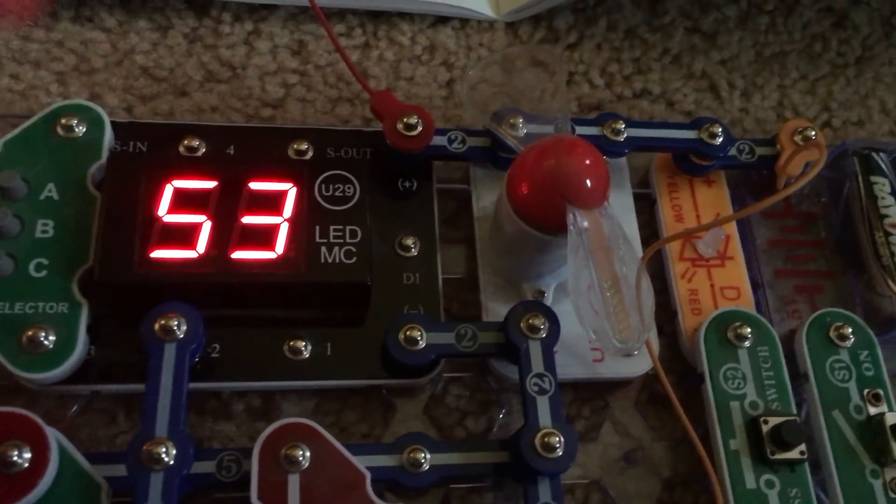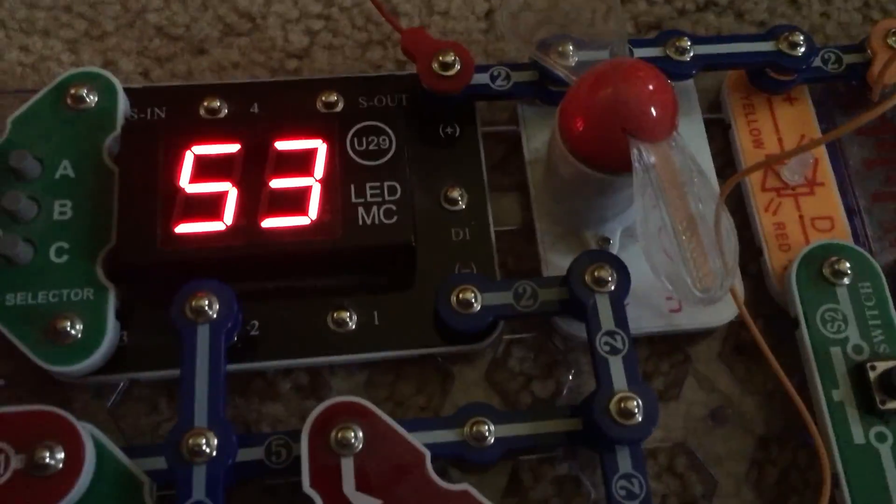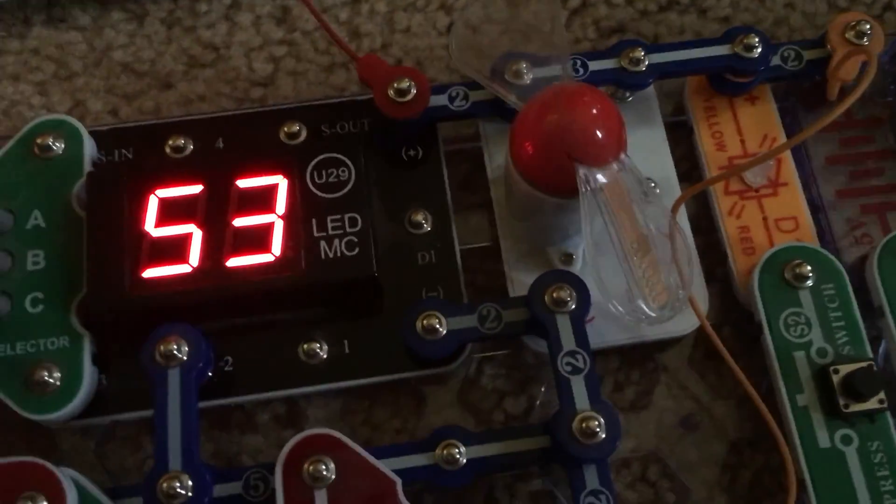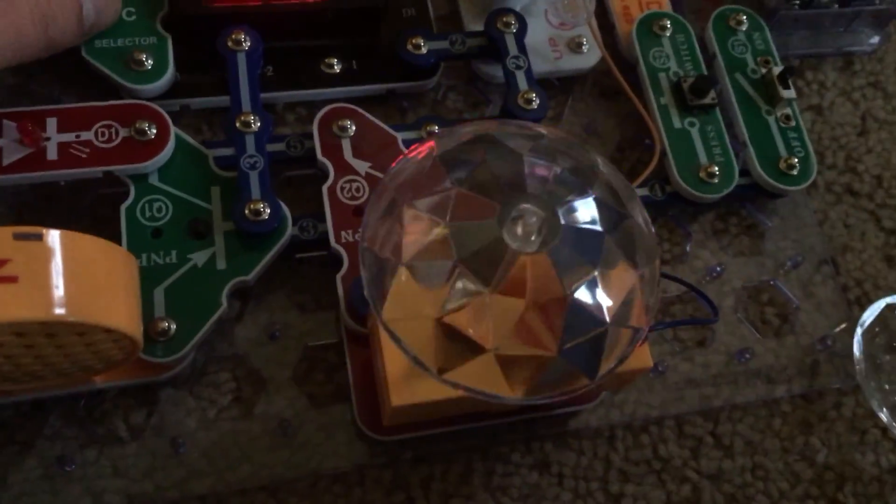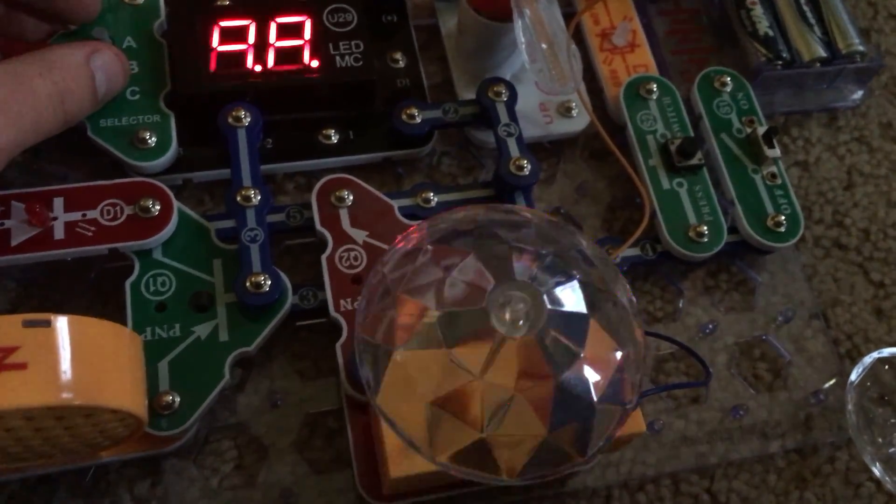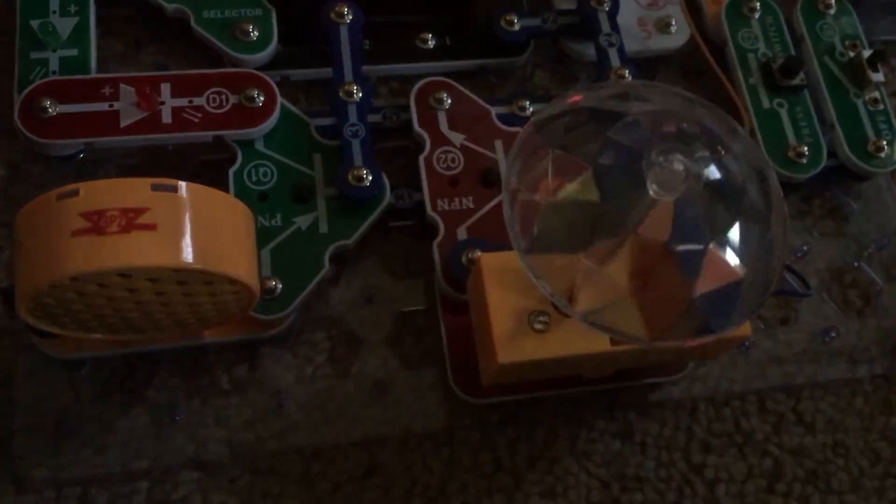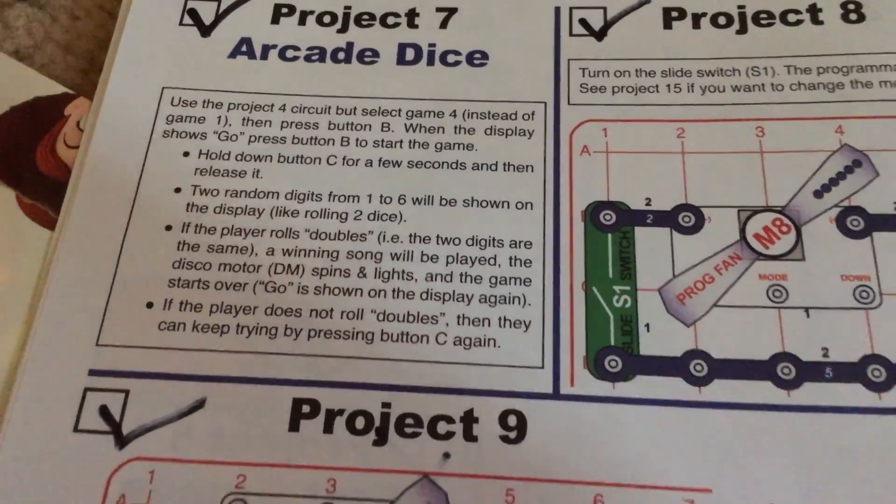And now, two random numbers between 1 and 6 will appear on each side of the display. In this case, you can pretend that you rolled a 5 and a 3. And, then you can roll again. Now, if you roll doubles, in this case 6, 6, the disco motor spins and the speaker plays a winning tune. I am going to do it again and hopefully you can see it. 3 and a 2, because I don't think I caught the motor spinning the last time. There we go. So, to make the game more fun, you can play with one or more other players. And, here are the instructions for if you want to play this game.